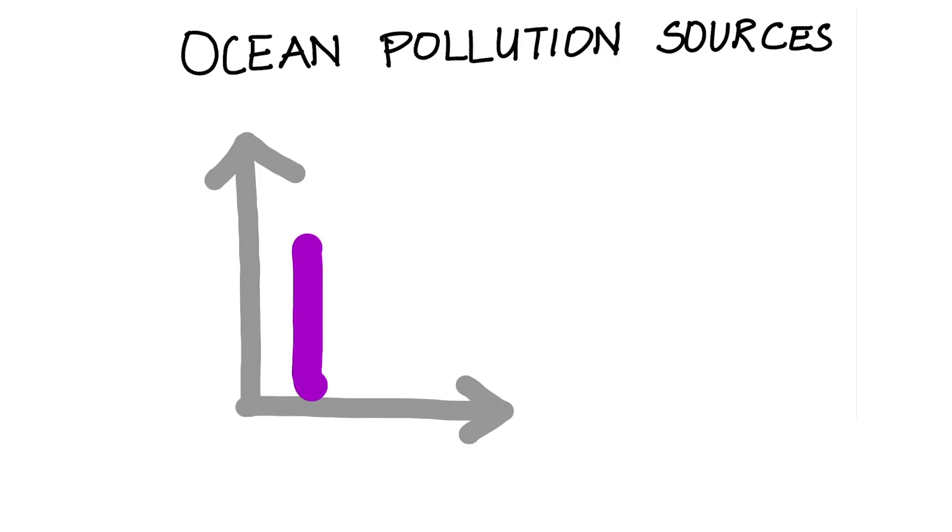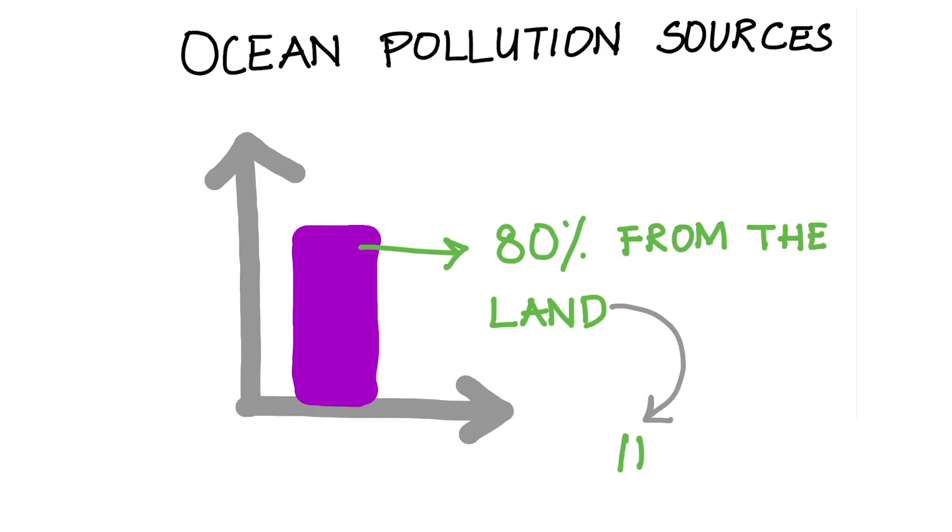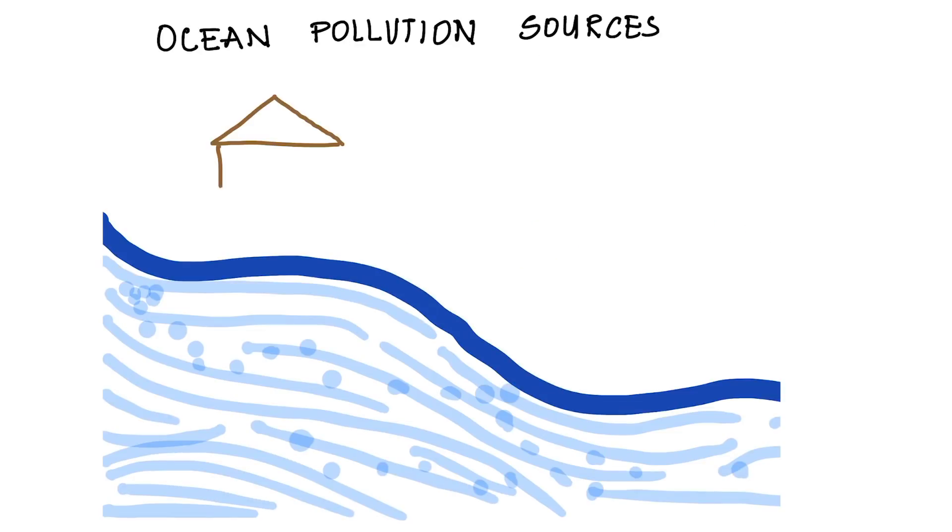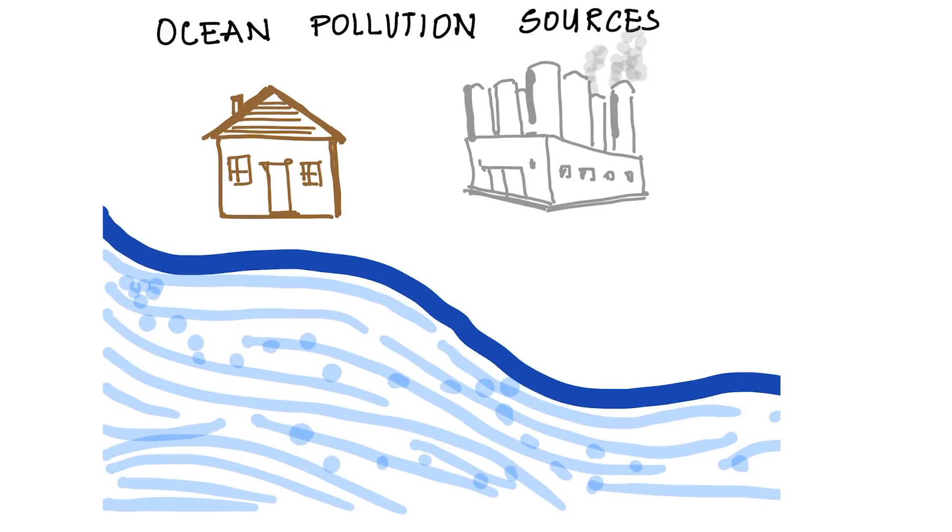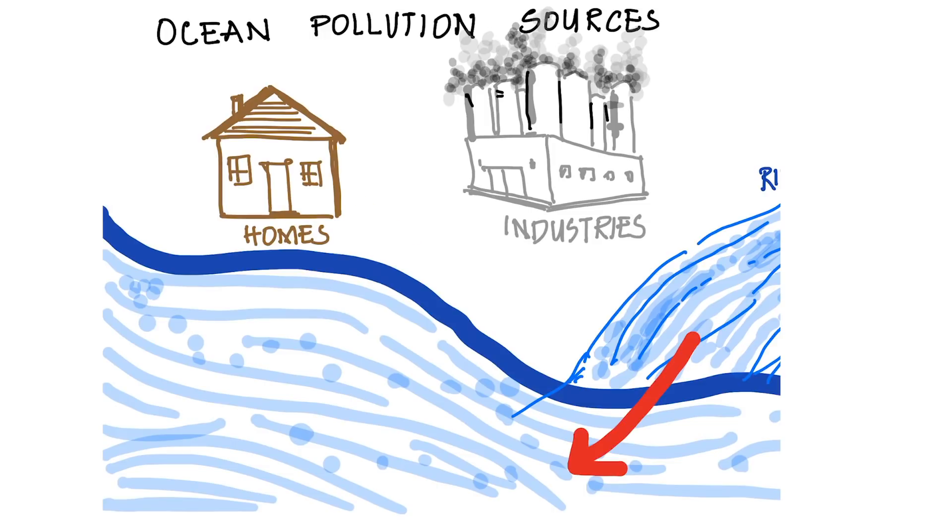While there are natural causes of ocean pollution, like windstorms, fish waste, and volcanoes, 80% of ocean pollution comes from the land, and that's primarily caused by humans. Major land-based pollutants include household and industrial waste that flows through sewer systems into rivers, and finds its way into the oceans. Watch my water pollution video to learn more about how we've been polluting our rivers. But back to ocean pollution.